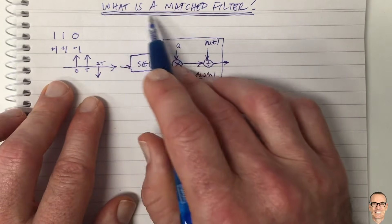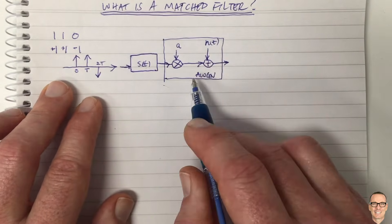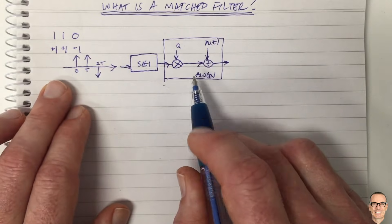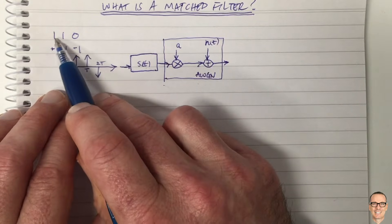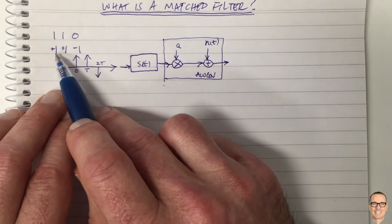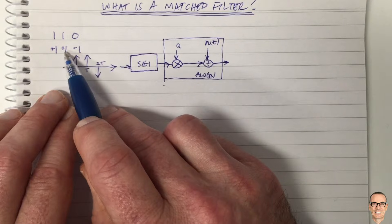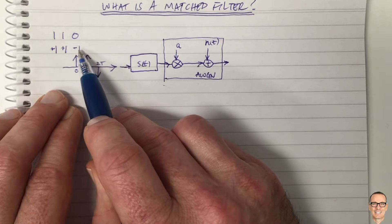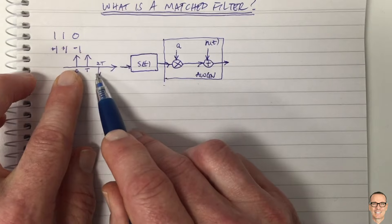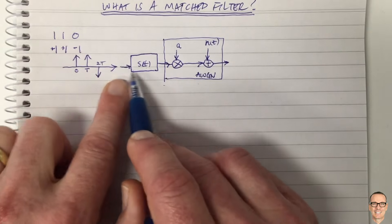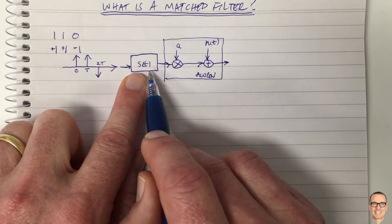Let's ask: what is a matched filter in a communication system? Consider some data: 1, 1, 0. We're going to send that with a plus 1 voltage, a plus 1 voltage, and a minus 1 voltage, and we represent these as impulses that are going to go into our transmit filter.